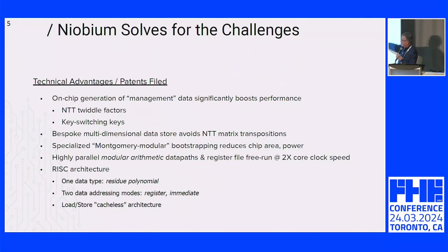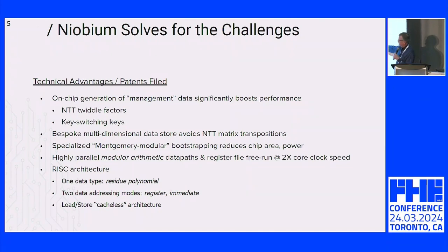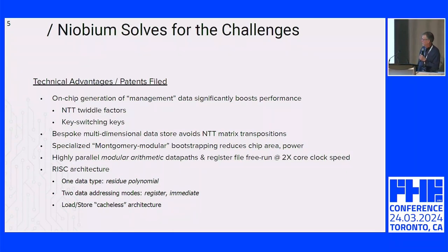We have a specialized Montgomery modular bootstrapping approach that reduces chip area and power significantly, using Montgomery modular arithmetic in the multiply-and-add units to make them more efficient. And a lot of the benefit comes from highly parallel modular arithmetic — we deal with double CRT representations where the little q's are all 64 bits or less, and we have 1,024 of those data paths running in parallel, so we can process a full 64K ring dimension in a small number of cycles.